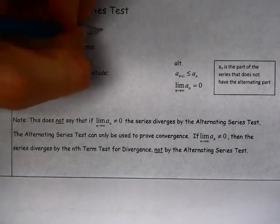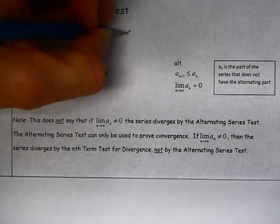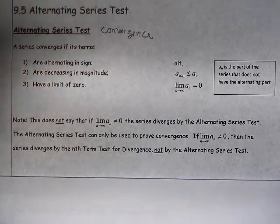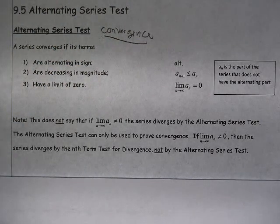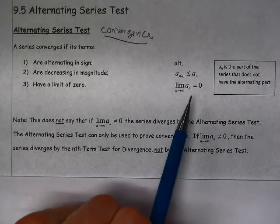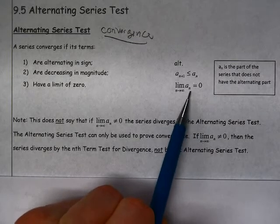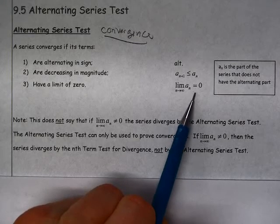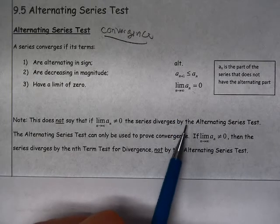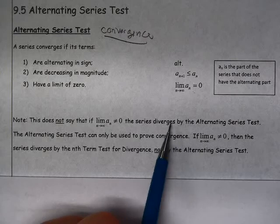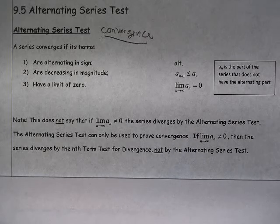Alternating series test is a test for convergence. So if you find a series that does not meet this last condition, it can't diverge by the alternating series test. We don't use the alternating series test to prove divergence. We only use it to prove convergence.